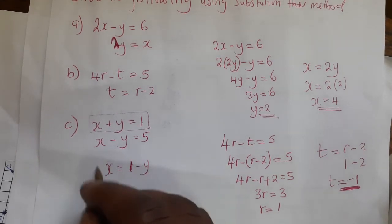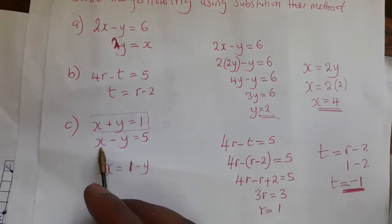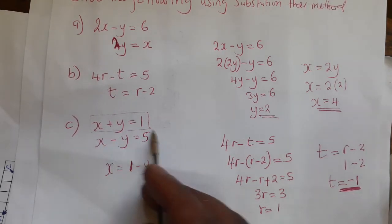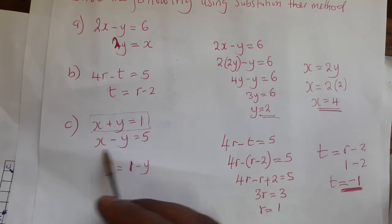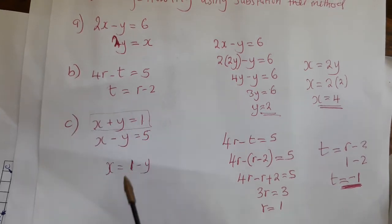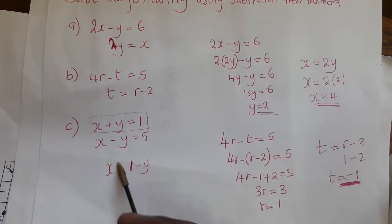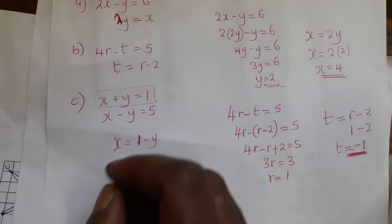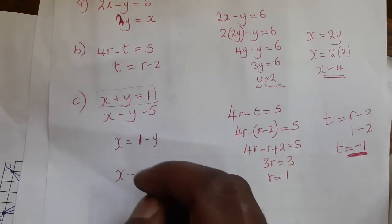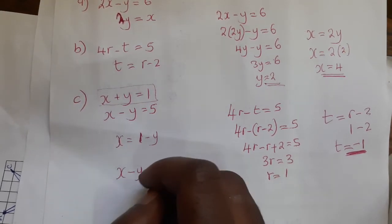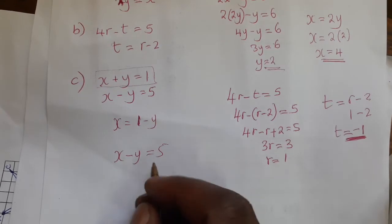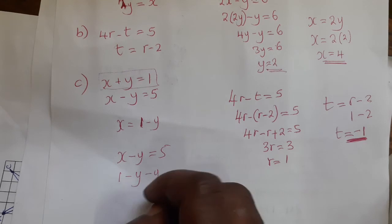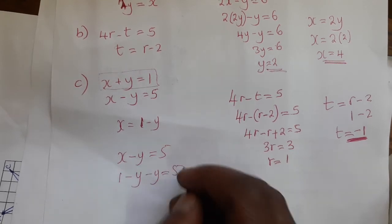After making x the subject of the formula, we go into the second equation. Where there is an x, we put 1 minus y. The second equation is x minus y equals 5, so we write: 1 minus y minus y equals 5.